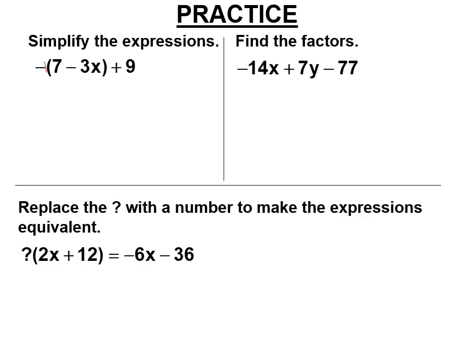So here you're distributing a negative 1. So it's negative 7. Negative 1 times negative 3x, positive 3x. Two negatives make a positive. So now we have like terms. You cannot leave it that way. You don't multiply the 9, but you do add negative 7 plus 9 and get 2. 2 plus 3x is in the wrong order. So you're going to switch it around 3x plus 2.